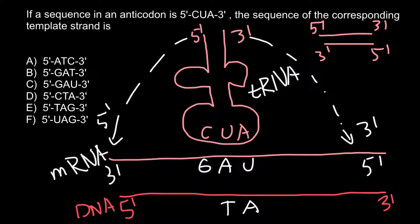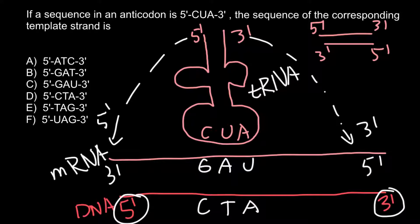We would have on the template strand of the DNA the following bases: uracil would base pair with adenine, adenine would base pair with thymine, and guanine would base pair with cytosine. We would have 5-prime here and 3-prime here. Now let's check the answers. As you see, 5'-CTA-3', this is going to be answer D.